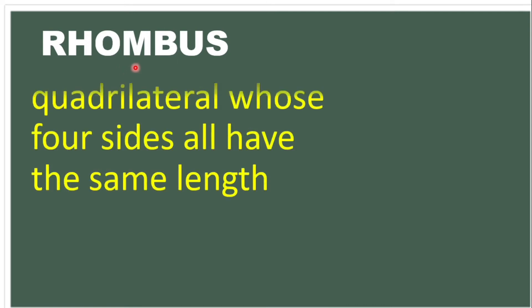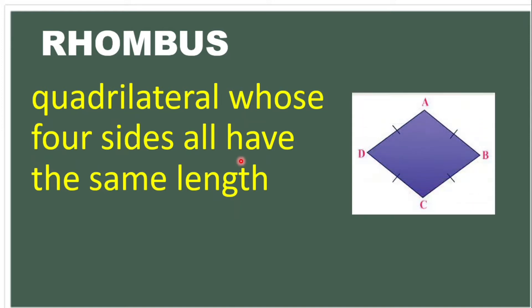We also have the rhombus. A rhombus is a quadrilateral whose four sides all have the same length. So the measurement of all sides are the same. In this example, all four sides are equal to each other — so it is a rhombus.